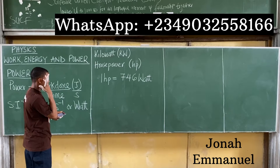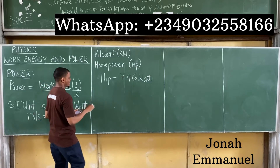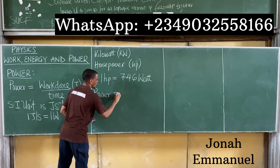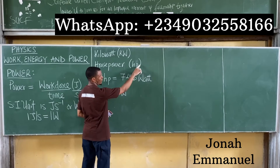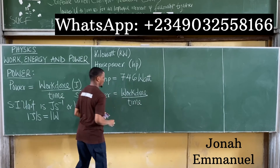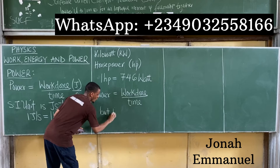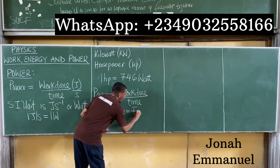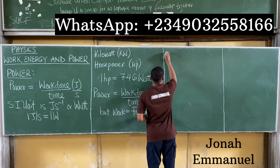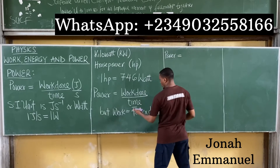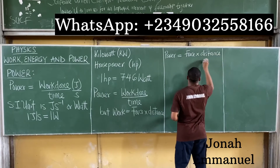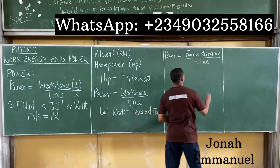Let's look at one more mathematical expression for power. We said power equals work done over time. Since work done equals force times distance, we can substitute: power equals force times distance, all over time.